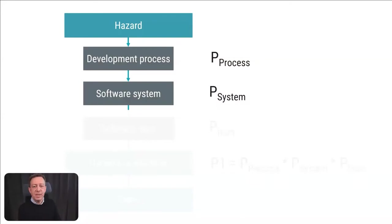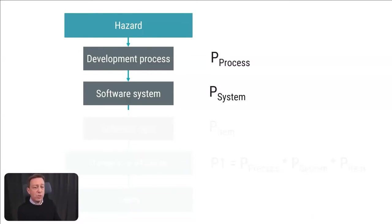Secondly, what are your options at the software system level to reduce the likelihood of software failure? Simplified, this relates to architectural design. At the software system level, you can deal with concerns applicable to several software items — for example, if a risk is related to processing speed, you could define system requirements assuring sufficient CPU power.